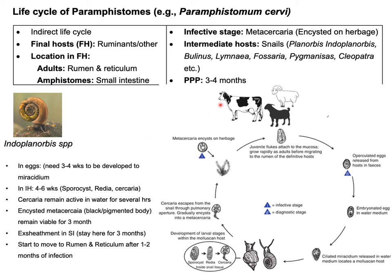Within three months, if the final host forages on contaminated pasture, they will be infected. The encysted metacercaria travels to the small intestine where excystation occurs. The encysted metacercaria stays in the small intestine for around three months but starts moving to the rumen and reticulum within one to two months of infection. The time required for completion of the life cycle is three to four months. The diagnostic stage is the egg, observed in feces. The infective stage is the encysted metacercaria.